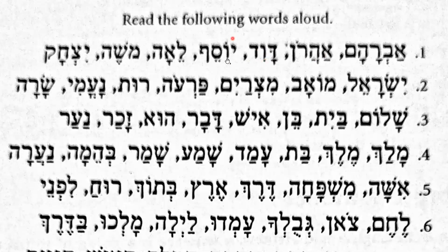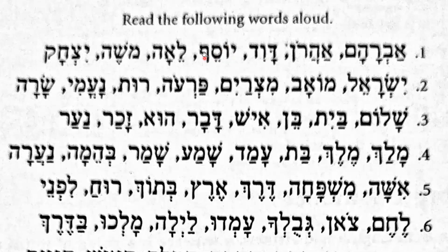The next is Yosef. Here is Yod, and here is Holam Vav, and here is Samek, and here is Pei — please note this is a final Pei. Here we see the final Pei. Yosef.